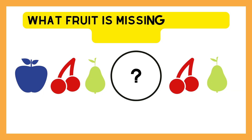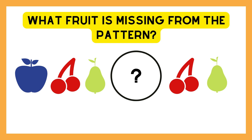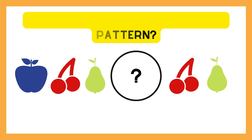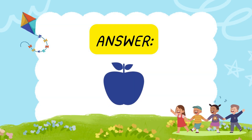What fruit is missing from the pattern? Apple, cherry, pear. Let's see what it is. 5, 4, 3, 2, 1. It is an apple.